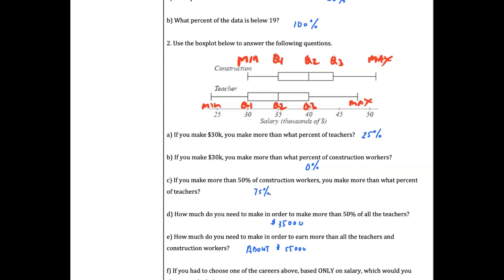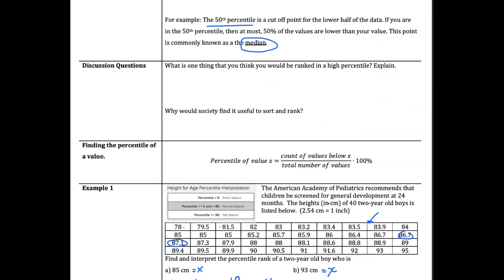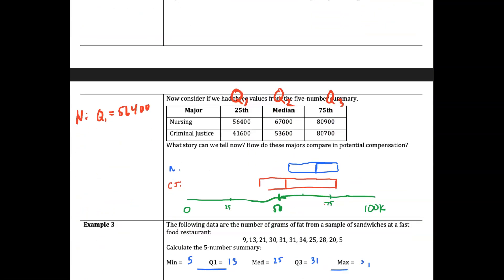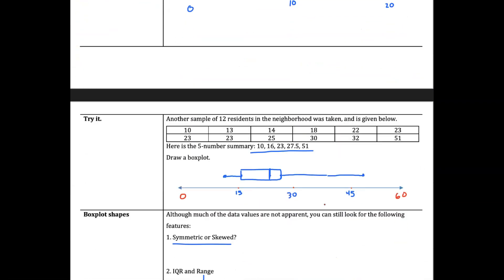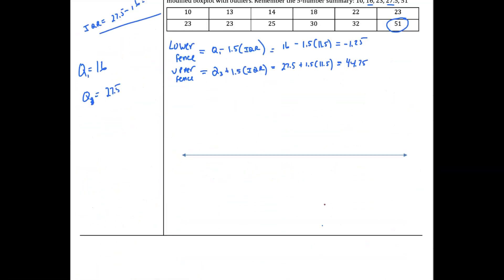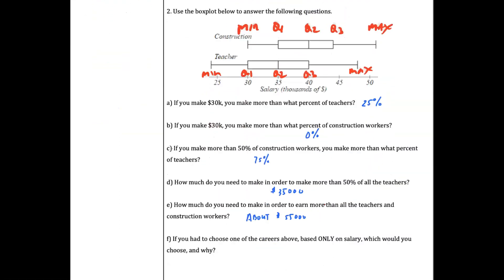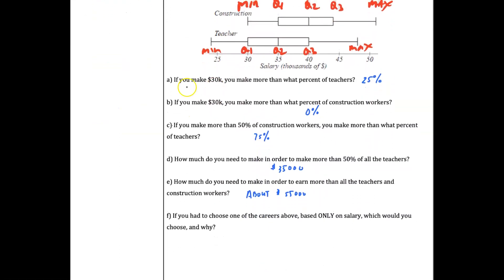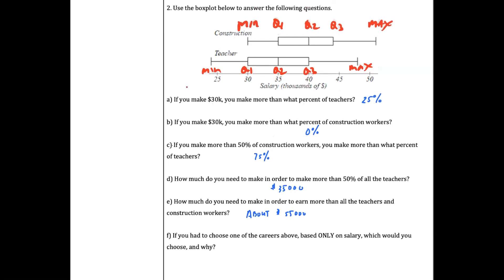Then you can go ahead and answer some questions here. Here are the answers - sorry about that - here are some answers to the questions. If you make $30,000, you make more than 25 percent because that's the Q1. You can see this is zero percent. There are the answers for them.